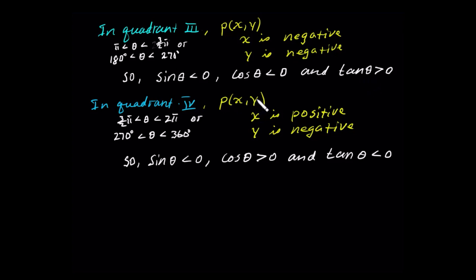In the fourth quadrant, the point P has coordinates x positive and y negative. The angle is between 270 and 360 degrees. In radian, 3 pi over 2 is less than theta is less than 2 pi. So sine has negative value because y is less than 0. Cosine has positive value because x is positive. Tangent is y over x — negative over positive — so tangent is negative.